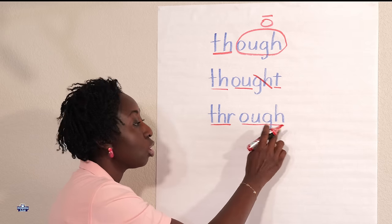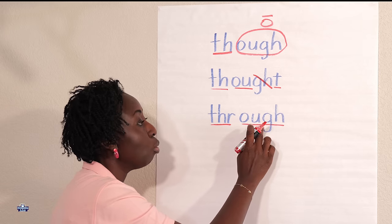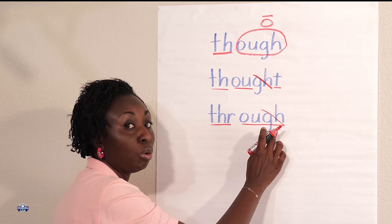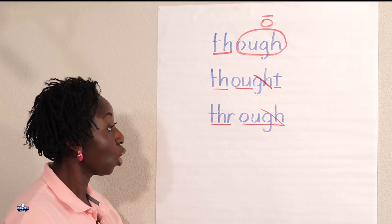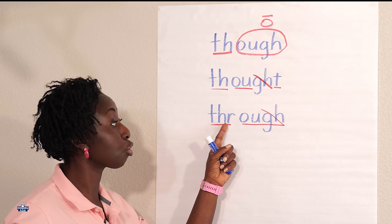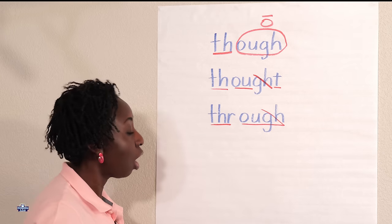Let's look carefully. Now the difference here is the R. Through. This is saying ooh, through. This is actually silent. This is the ooh sound, so through. The R, through.